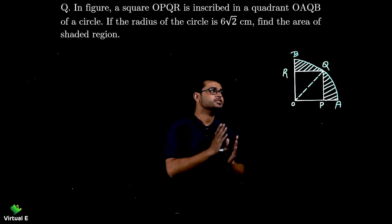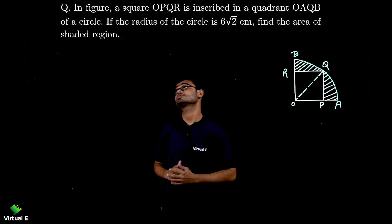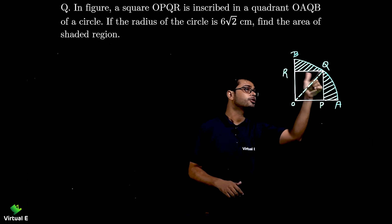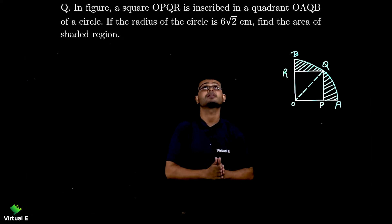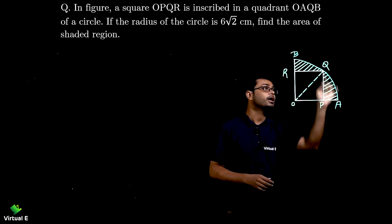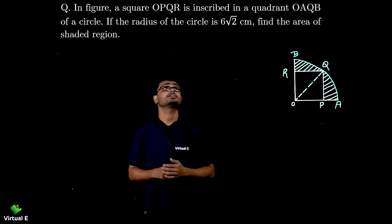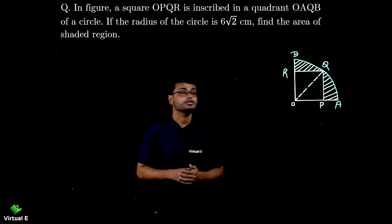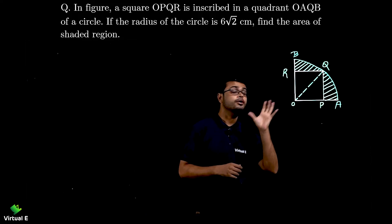Let's discuss one more case with a square and circle. In the figure, a square OPQR is inscribed in a quadrant OAQB of a circle. If the radius of the circle is 6√2 centimeters, find the area of the shaded region. So far we were dealing with a full circle; now we have a quadrant of a circle with a square inside.